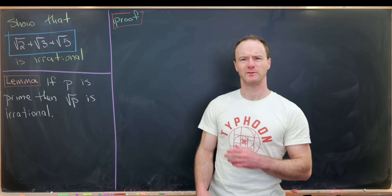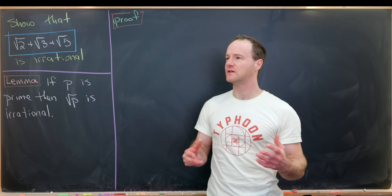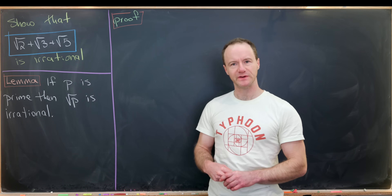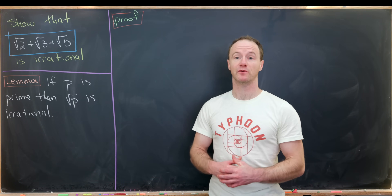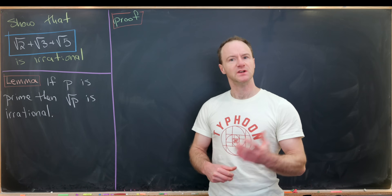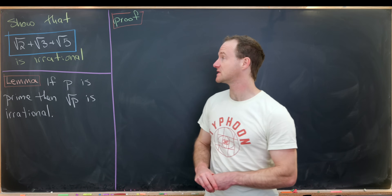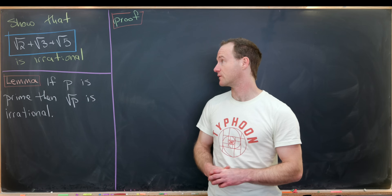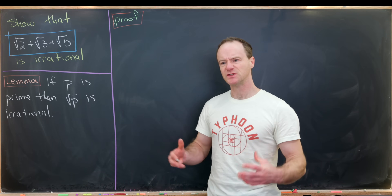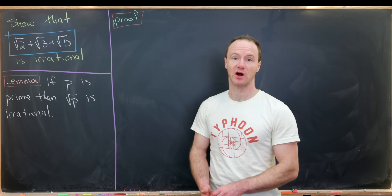Here I've got a nice number theory problem. There are tons of videos on YouTube showing that the square root of 2 is irrational, or maybe the square root of 3 is irrational. Today I'd like to show that the square root of 2 plus the square root of 3 plus the square root of 5 is irrational. This is kind of a leveled up version of one of those problems.